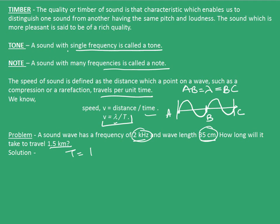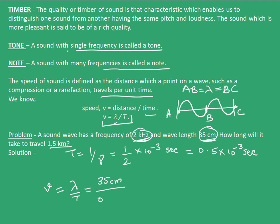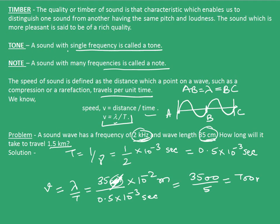Time period T = 1/ν = 1/(2 × 10³) seconds, since frequency is in kilohertz. This equals 0.5 × 10⁻³ seconds. Now, speed V = wavelength/time period = 35 centimeters divided by 0.5 × 10⁻³ seconds. Converting centimeters to meters by multiplying by 10⁻², this becomes 3500 divided by 5, which is 700 meters per second.